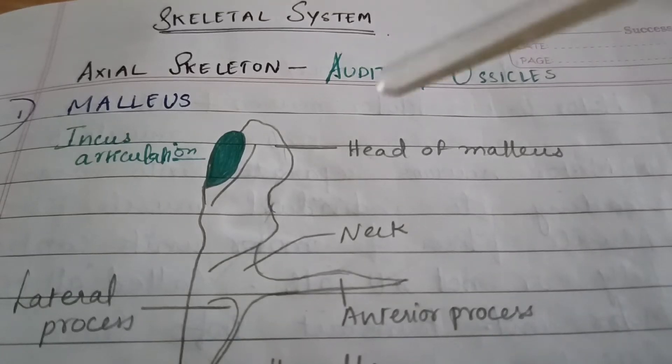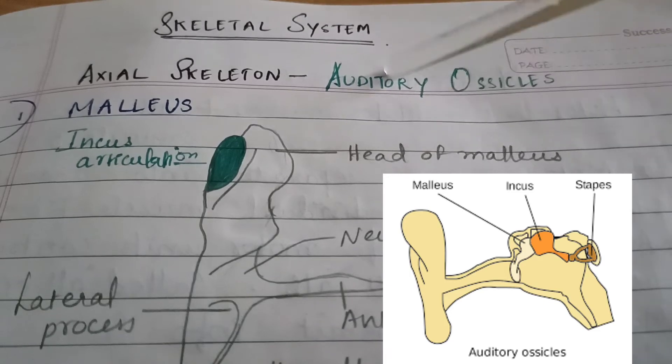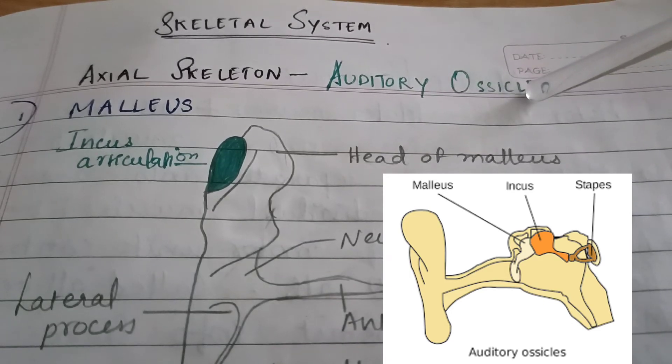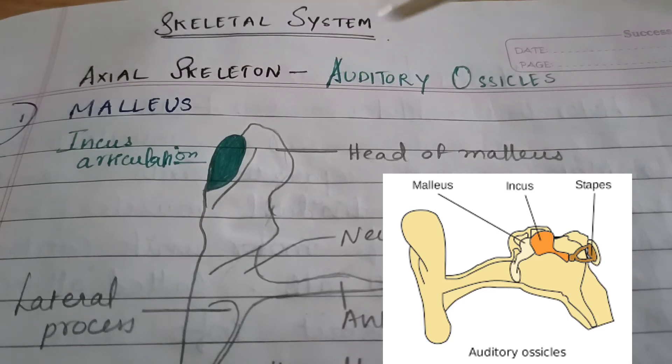Today we're going to be looking at auditory ossicles which are the three bones in the middle ear that are the smallest bones in the human body: malleus, incus and stapes.